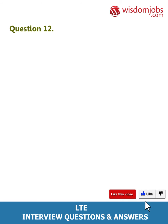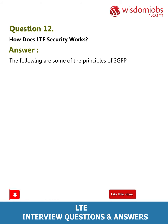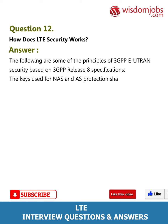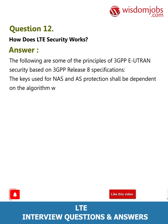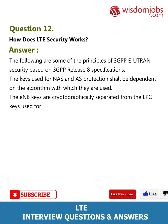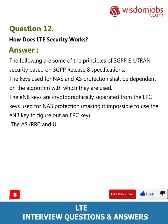Question 12: How does LTE security work? The following are some of the principles of 3GPP E-UTRAN security based on 3GPP Release 8 specifications. The keys used for NAS and AS protection shall be dependent on the algorithm with which they are used. The eNB keys are cryptographically separated from the EPC keys used for NAS protection, making it impossible to use the eNB key to derive an EPC key.